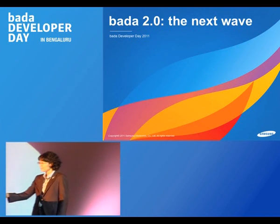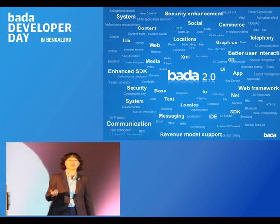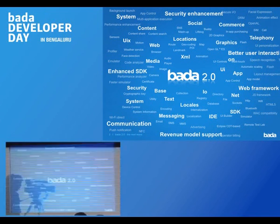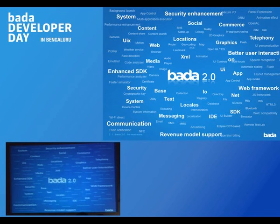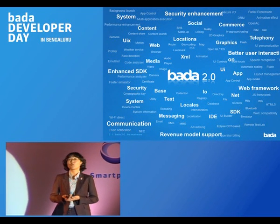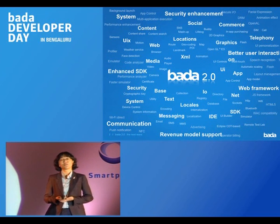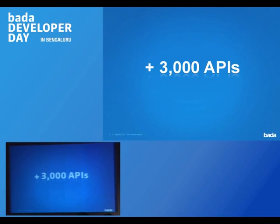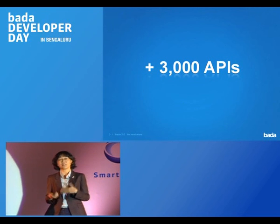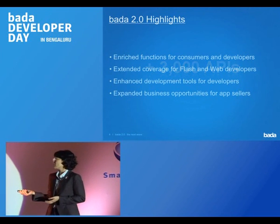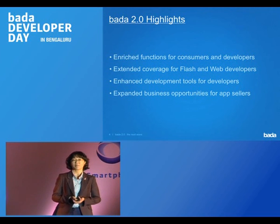I think most of you have already heard about the Bada SDK release news and some of you may have downloaded the SDK already. The Bada SDK 2.0 has many features — we have more than 3,000 APIs added in this new SDK and more than 50 new features. The Bada platform has evolved so that it enables making more powerful and wonderful applications.